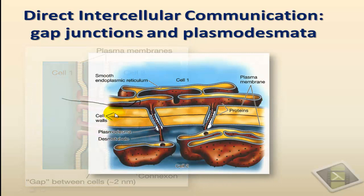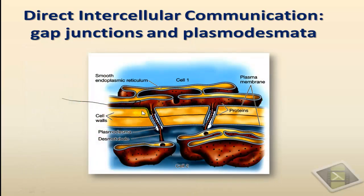The other example is that of plasmodesmata in plant cells. Plasmodesmata are channels or direct links between plant cells, involving tubules that link the endoplasmic reticulum of one cell to that of another. Those tubes are known as desmotubules. Through desmotubules, molecules found in one cytoplasm can quickly diffuse and be transferred to the cytoplasm of another cell.